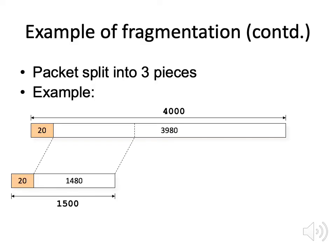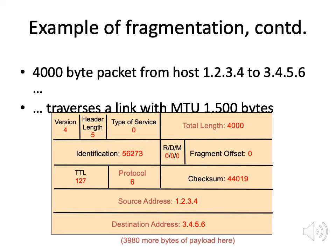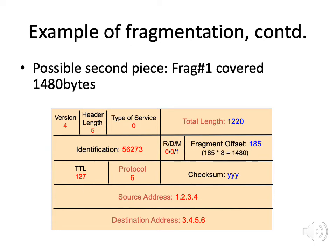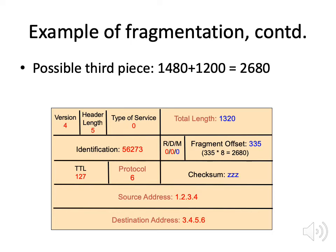Here's a numeric example. Suppose we split a 4,000-byte packet into three pieces. The original packet has an identification field, a checksum, and offset zero. The first fragment has more-fragments bit set to one, fragment offset zero, total length 1,500, and a new checksum. The second fragment has an offset of 185 (representing bytes at 1,480), total length 1,220, more-fragments bit set, and a new checksum. The final fragment has total length 1,320, fragment offset 335 (times 8 bytes = 2,680), more-fragments bit set to zero, and a new checksum. The receiver now knows it has the complete packet.